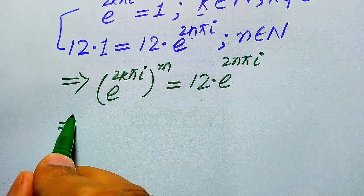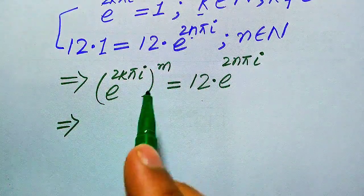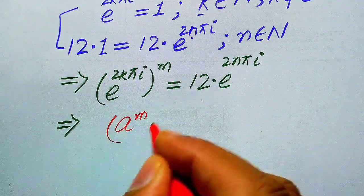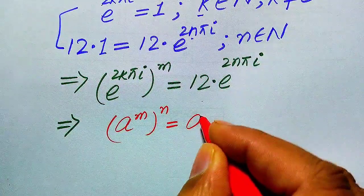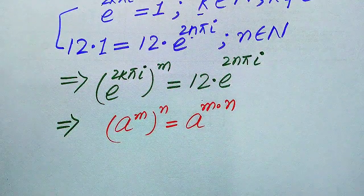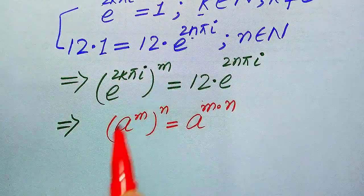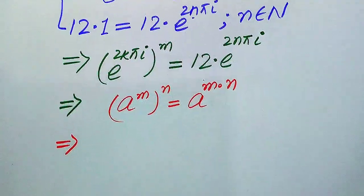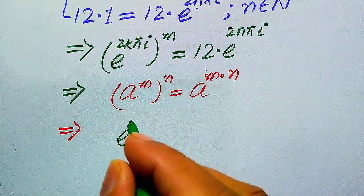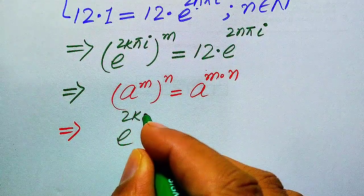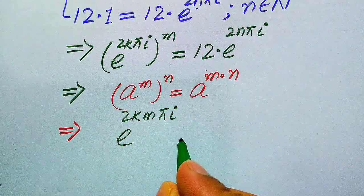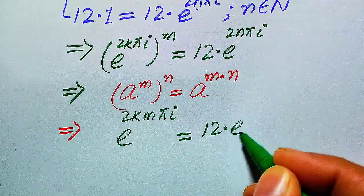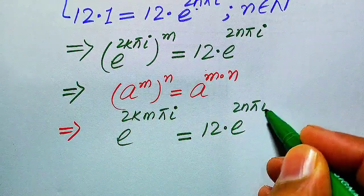In the next step we apply the exponential law: a to the power of m to the power of n equals a to the power of m·n. According to this rule, we multiply the two exponents. After multiplication it becomes e to the power of 2km·π·i, which equals 12 times e to the power of 2n·π·i.